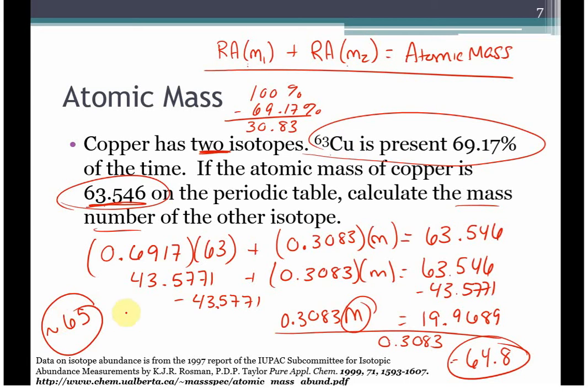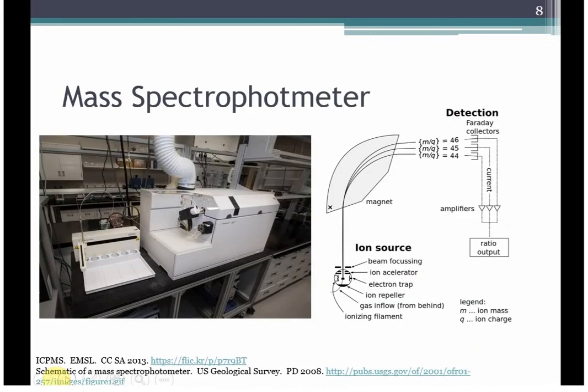So the second isotope of carbon should be, excuse me, not carbon, copper. The second isotope of copper should be copper 65.